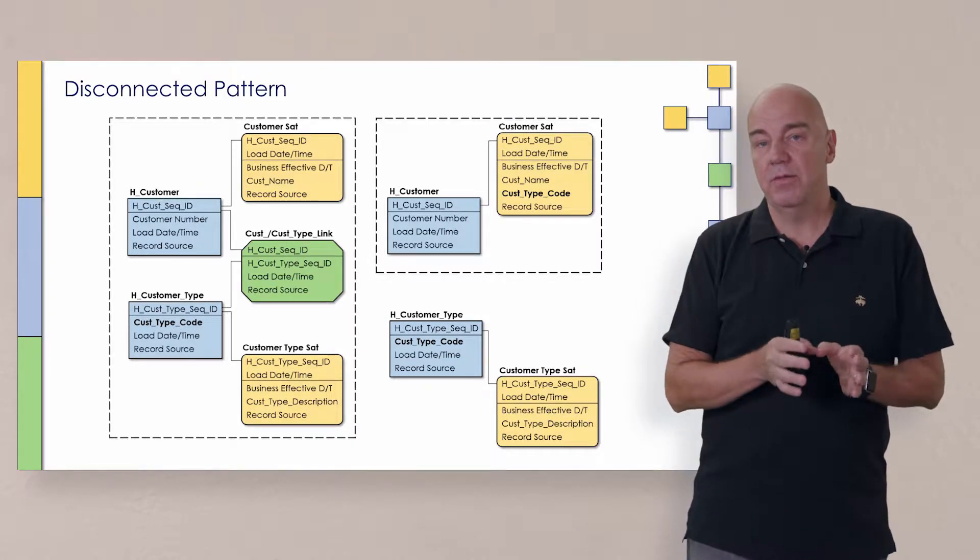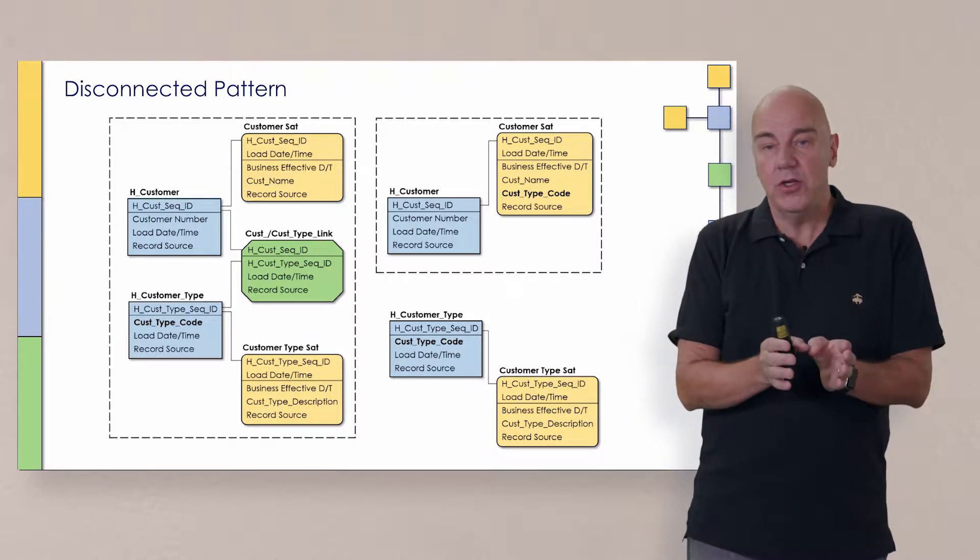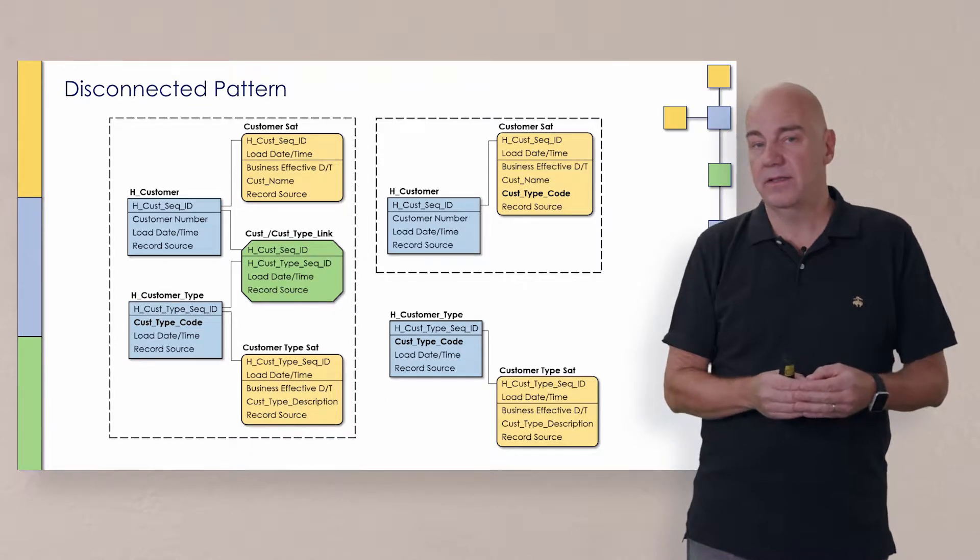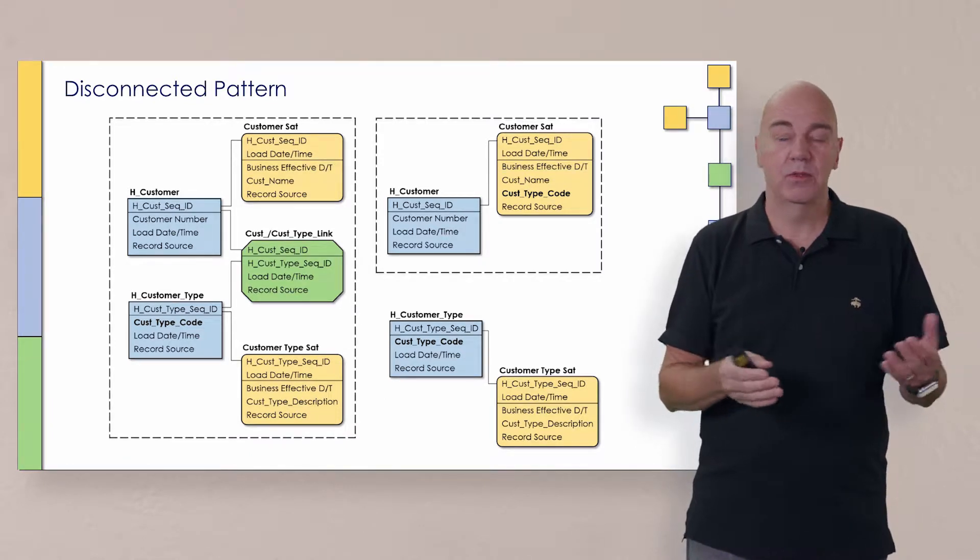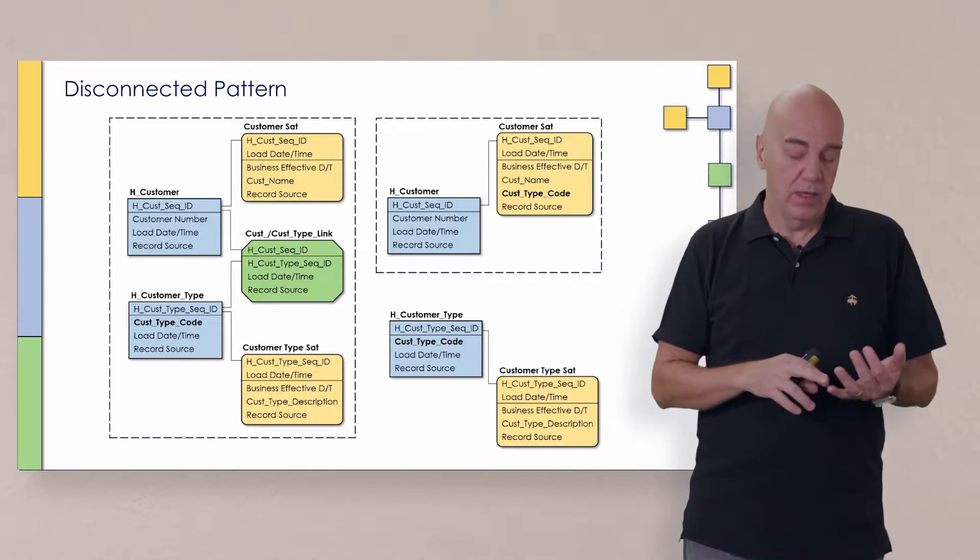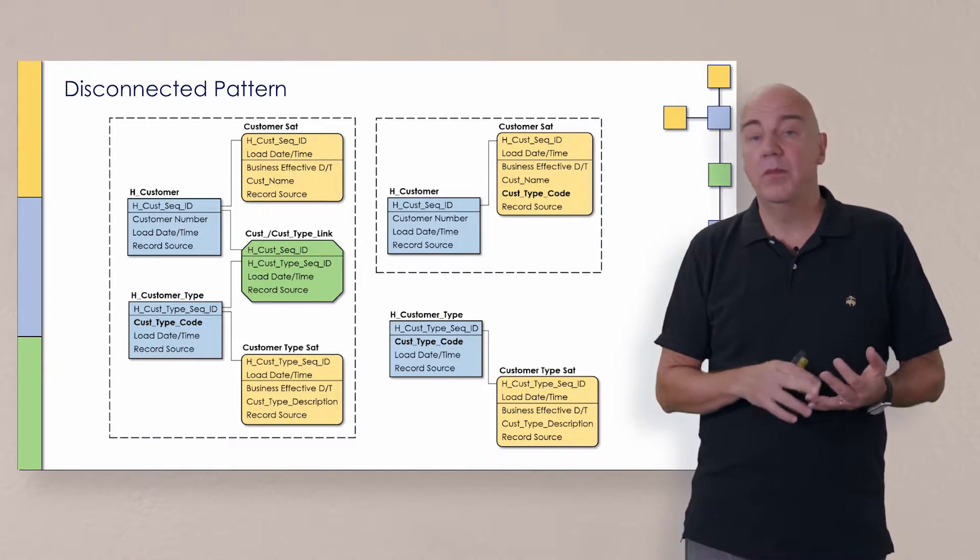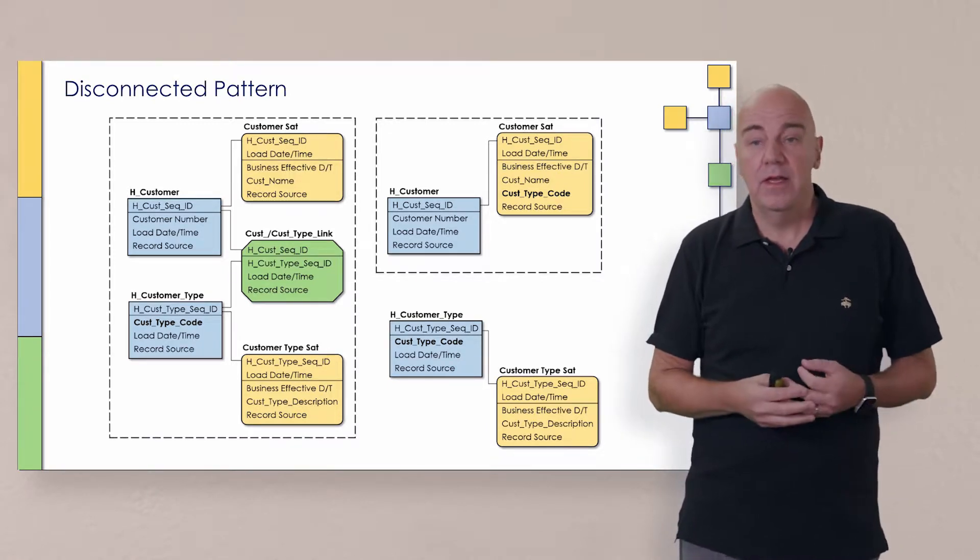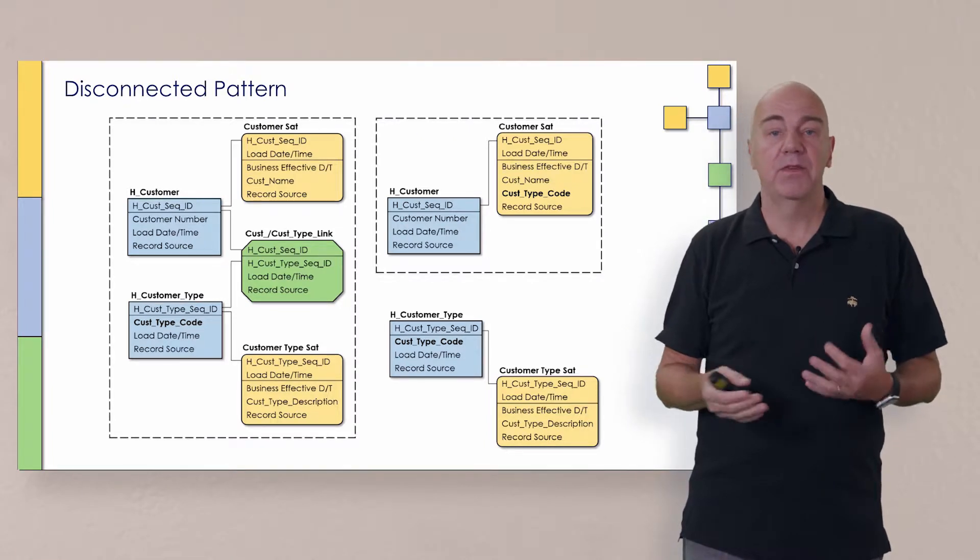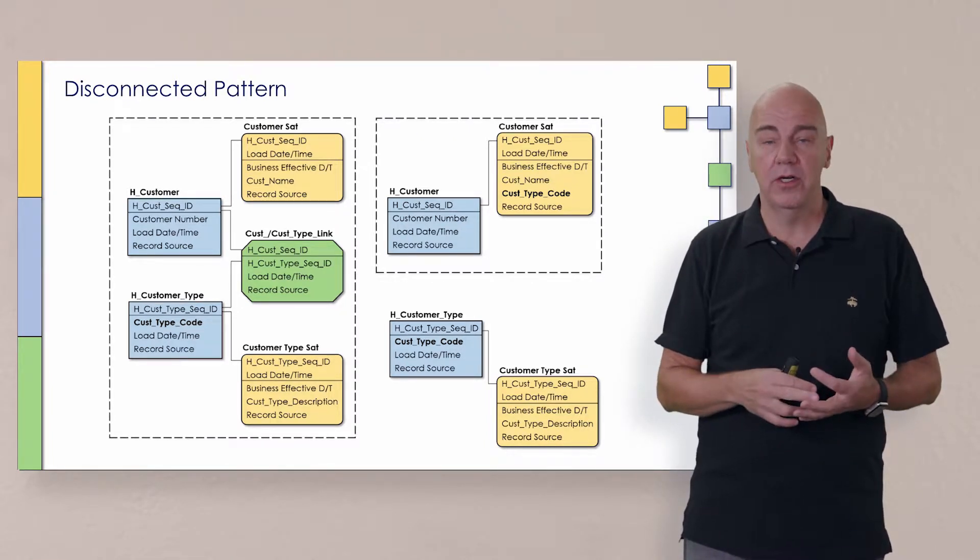And even if it is its own core business concept, we can instead look at modeling it by taking the value of the customer class itself. So let's say the customer class types, or customer types in this case, were small, medium, and large.